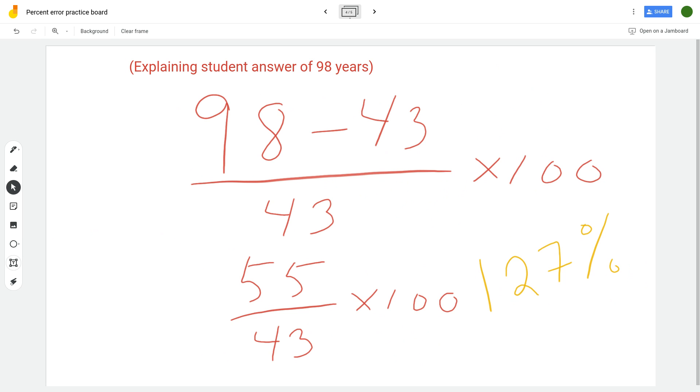All right, so this was a guess that was very off. So if a scientist, in other words, if a scientist got 127 percent error...